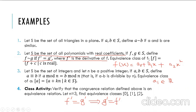Now, how do we find the equivalence class of a certain polynomial f? The equivalence class of f contains all those polynomials g in S such that f′ = g′, because that is how we defined the relation. So when do two polynomials have equal derivatives?